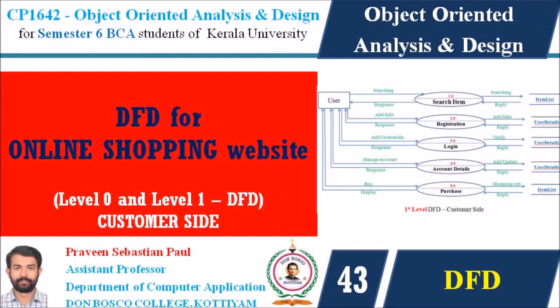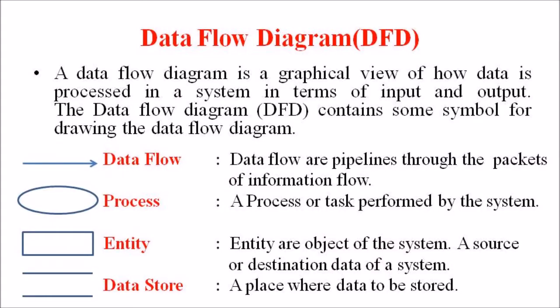A data flow diagram is a graphical view of how data is processed in a system in terms of input and output. The data flow diagrams contain some symbols for drawing the data flow of a particular system. The four major symbols used in this DFD include data flow, process, entity, and data store. Data flows are pipelines through which packets of information flow, and they are represented by an arrow symbol.